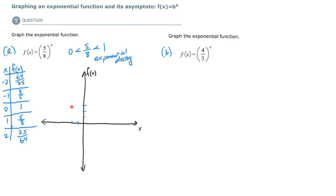Negative 1 is 1 and 3/5ths, right about here. At 0, we get 1. When x is 1, we get 5/8ths, so a little bit more than a half. And then when x is 2, we get 25 over 64, a little bit more than a third — right around a third. So at 2, it's about a third, we're out here.